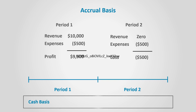If we compare that with the results of the cash basis, you will notice that it does not reflect the performance. When services are provided in the first period, it showed a loss, while in the second period, when no services are provided, it showed a $10,000 net income, which does not reflect the performance.